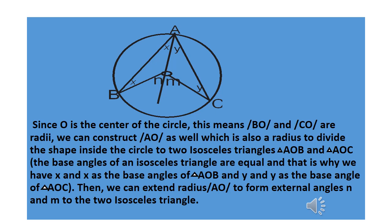So we have two isosceles triangles. One of the properties of an isosceles triangle is that the base angles are equal. That's why we have x and x as the base angles of triangle AOB, and y and y as the base angles of triangle AOC. The base angles must be equal — xx for triangle AOB and yy for triangle AOC.